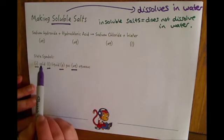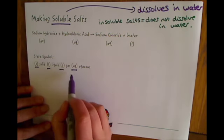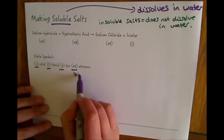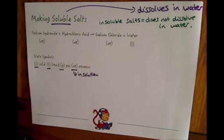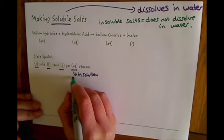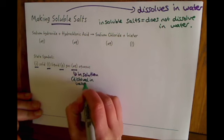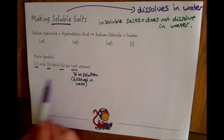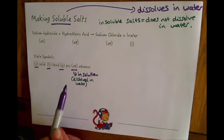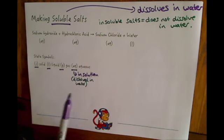The first three are pretty self-explanatory — solid, liquid, and gas. Aqueous means it's in solution, or dissolved in water. This is really important because if we see a salt with the symbol aq next to it, we should be able to work out that it's actually a soluble salt, because aq means it's in solution, dissolved in water.